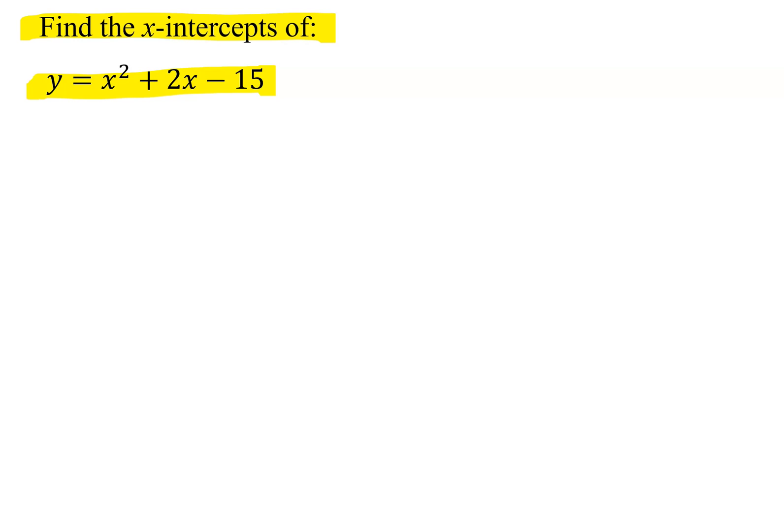How do we find the x-intercept for any equation? You find the x-intercept by setting y equal to 0. So I'm going to have 0 equals x squared plus 2x minus 15.